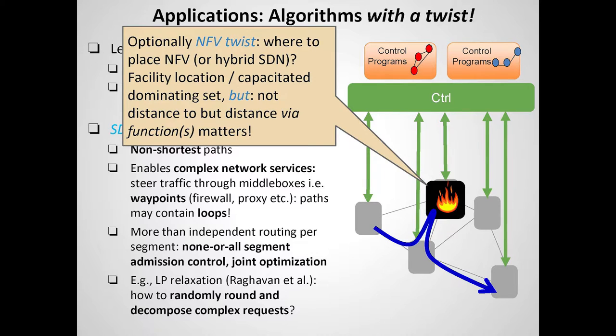If you go for an approach like LP relaxation and randomized rounding, as Raghavan initiated in this literature, it's not so easy anymore to decompose the request into linear parts. Formulating the standard ILP and decomposing it, you can see that as the request becomes more complex the relaxed solutions no longer are simple linear combinations of the elementary solutions. We have managed to do this randomized rounding, but there is much more to be done. There is also the optional NFV twist: you can deploy middle boxes at chosen locations.